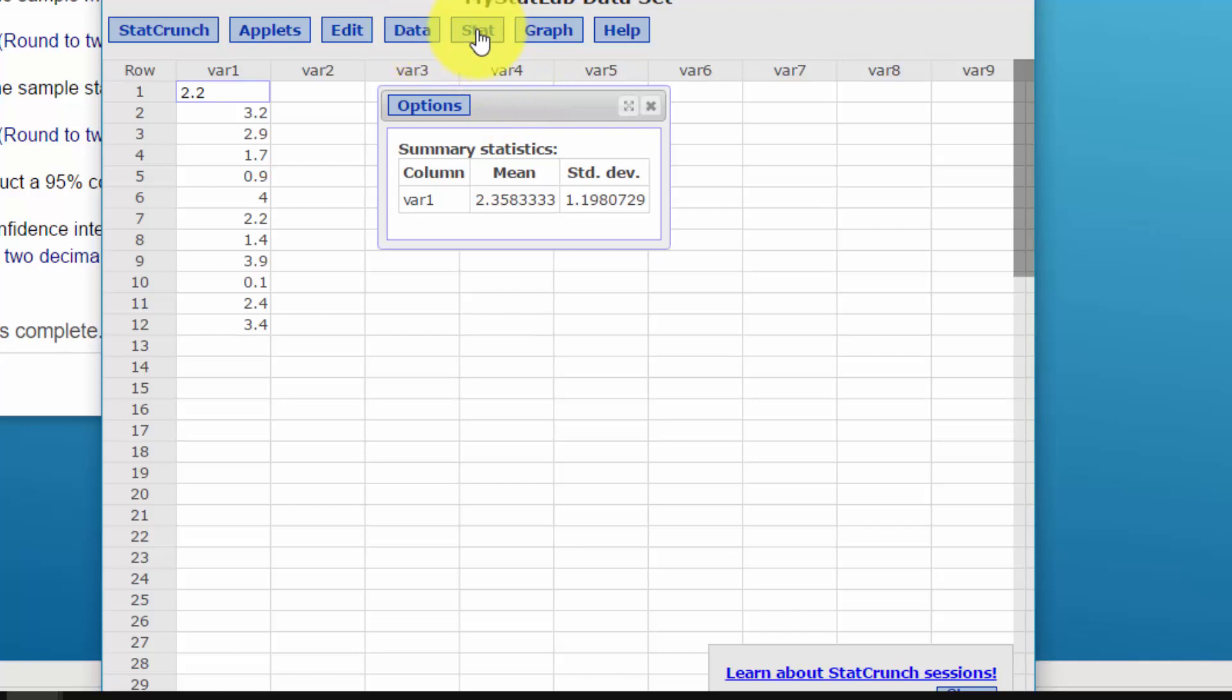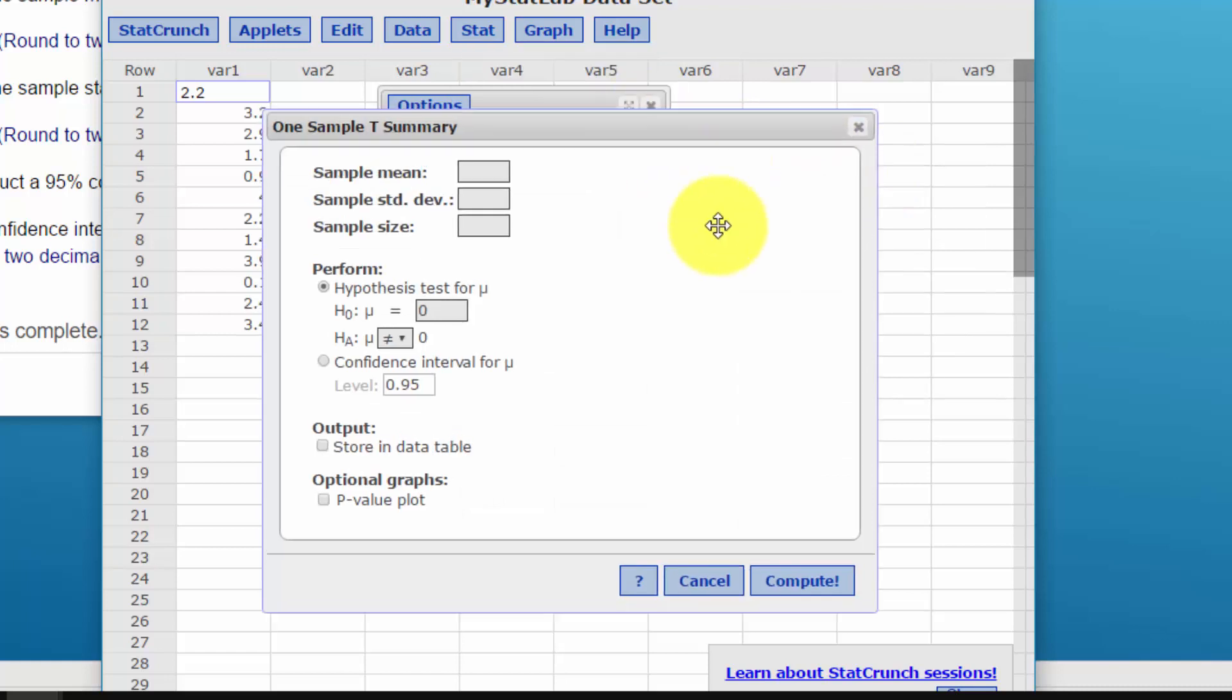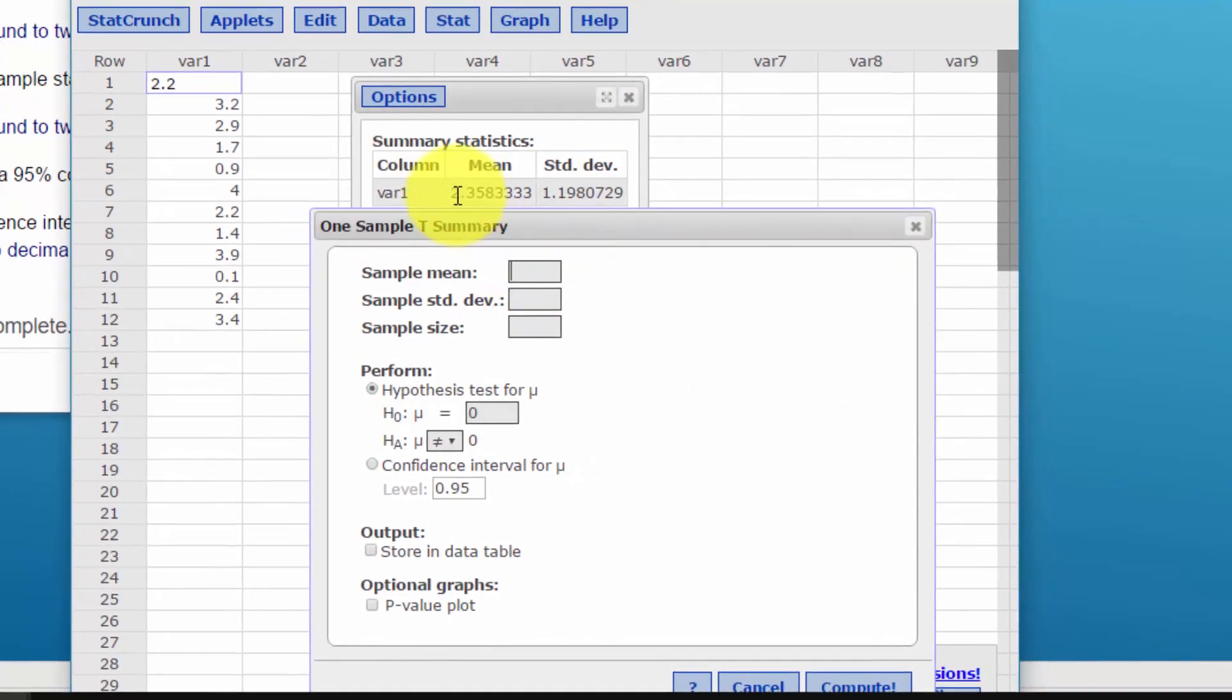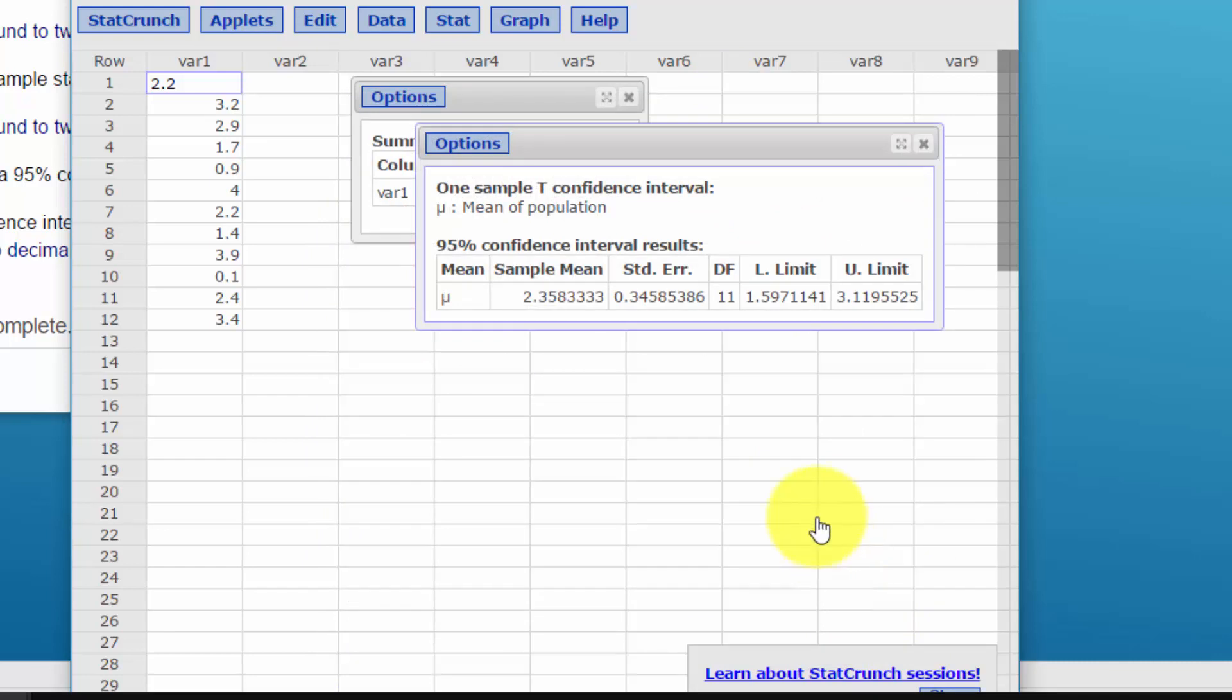So I'm going to go to Stat, t-stats, one sample with summary. Bring this down. Our sample mean, we just copy it. Control C. Control V. I think that worked. We've got 12 for our N. We want to click on Confidence Interval. And we want the 95%. I'm just going to click on Compute. And we get a confidence interval of 1.56 rounded to two decimal places and 3.12.